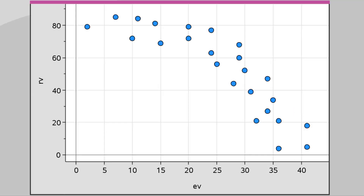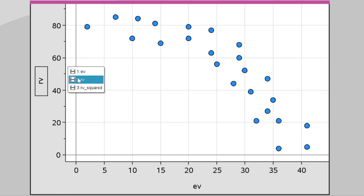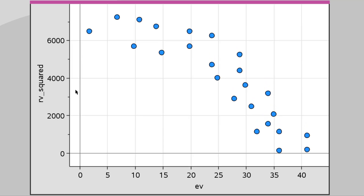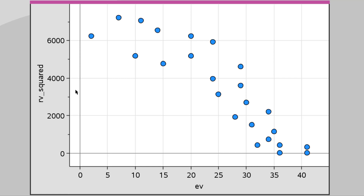Let's look at a different data set. This time I might want to linearize it by stretching out those larger y values. So I'm going to click on the response variable and change it to response variable squared — squaring all the y values. When I do that, it stretches out those larger y values. The whole scale changes, and we now have something that's not perfectly linear but is certainly more linear than it was.